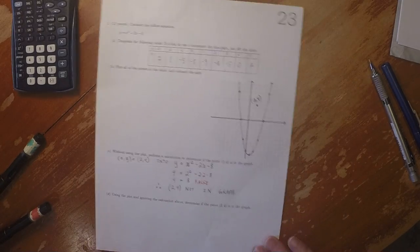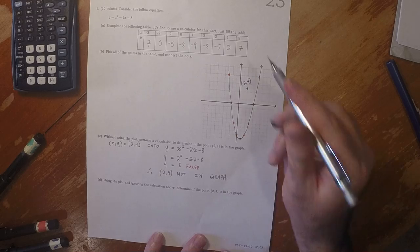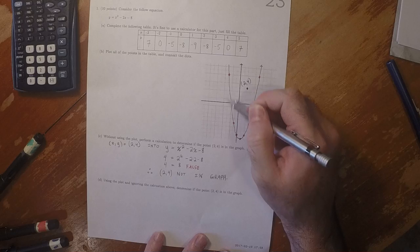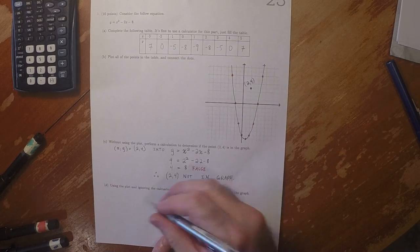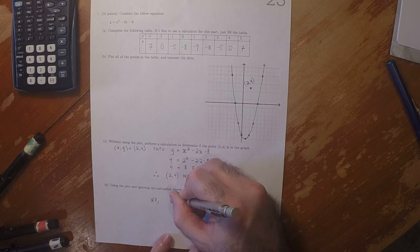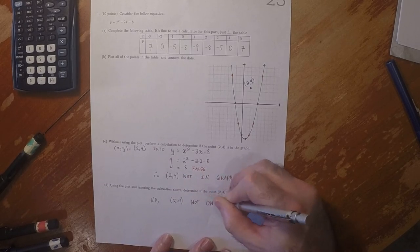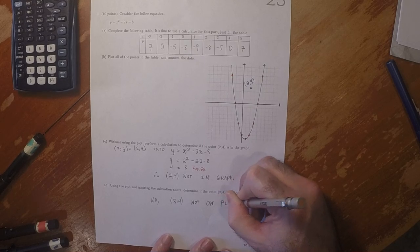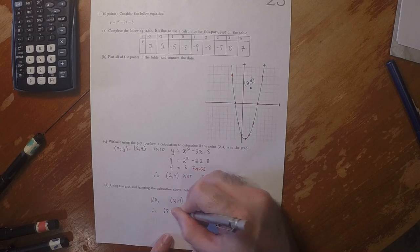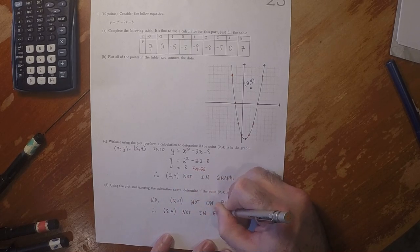Asking if (2, 4) is in the graph is equivalent to asking if that blue point is in this plot. So the answer is no. (2, 4) is not on the plot, and therefore (2, 4) is not in the graph.